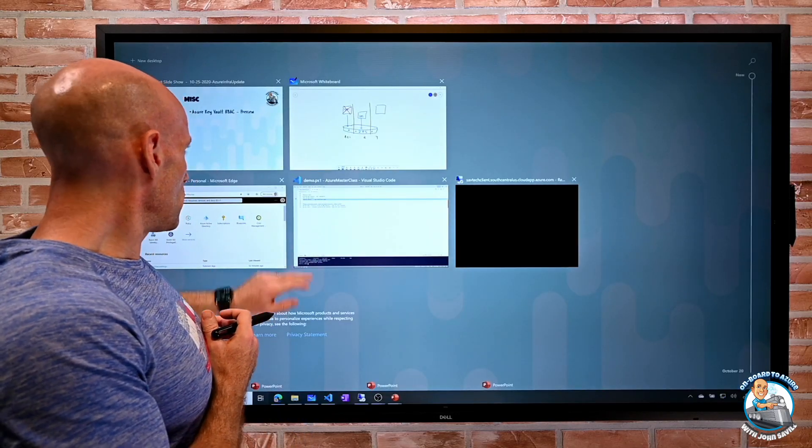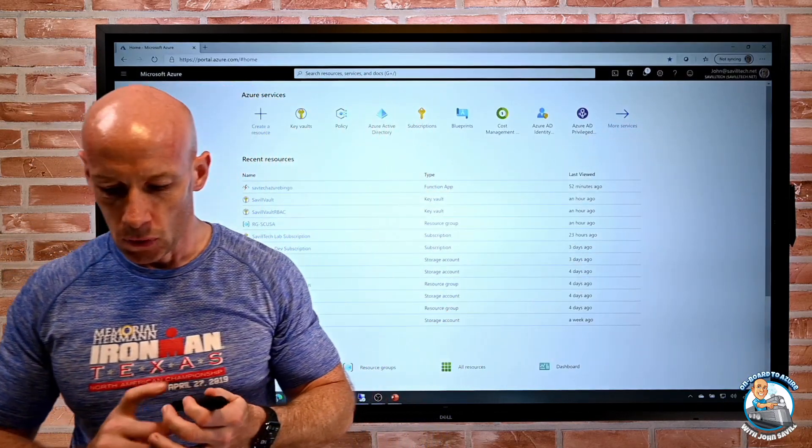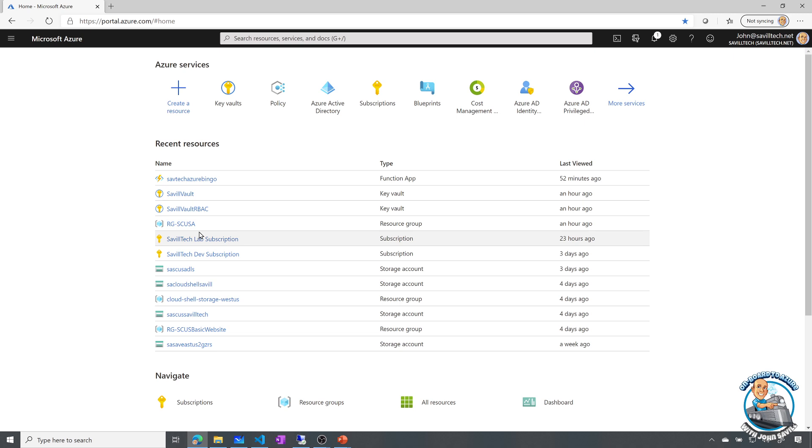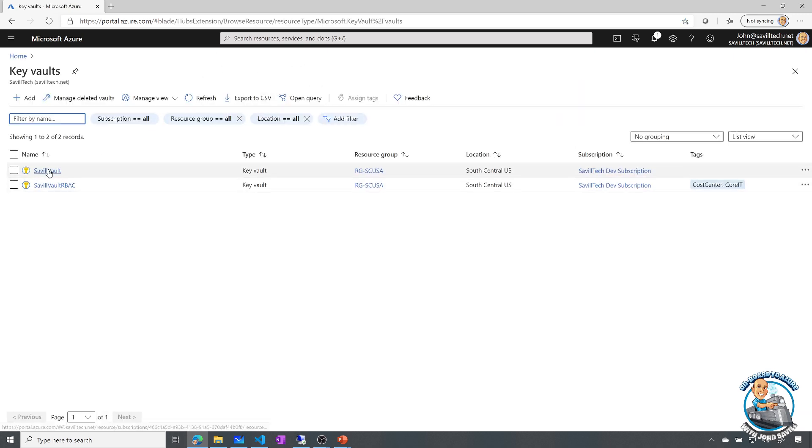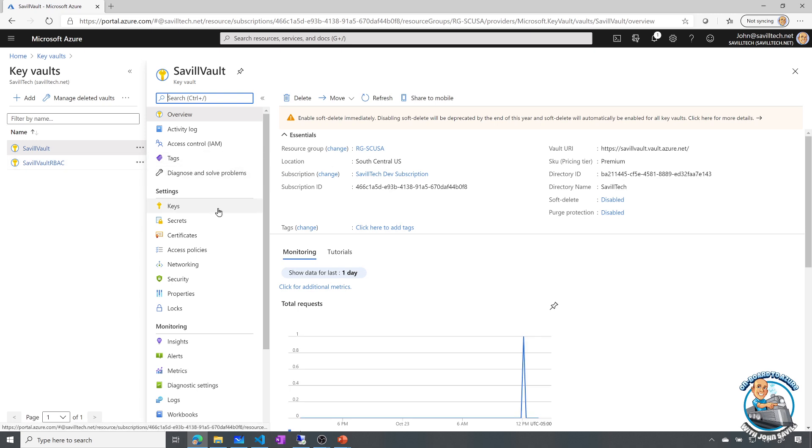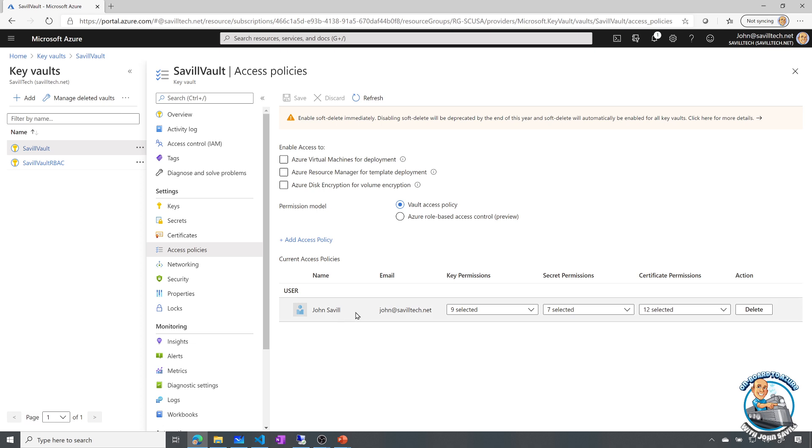So if we jump over to the portal, let's just make it a bit bigger. So if I go and look at my key vaults, firstly, if we look at my old key vault, and if we look at access policies, I had this policy where I could give a user permissions, but it wasn't secret specific, I could see them all or nothing.